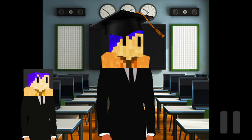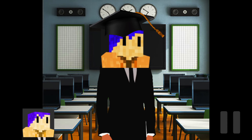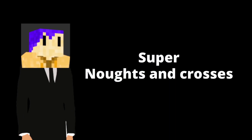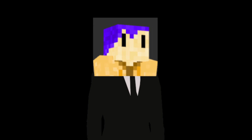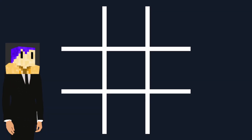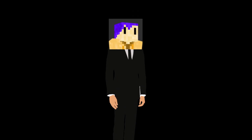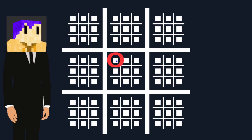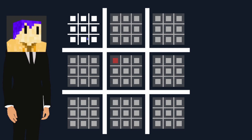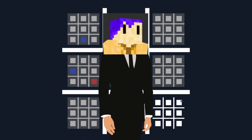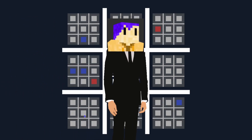Before we begin, we need to actually learn what Super Noughts and Crosses is — don't worry, this won't take long, I promise. Super Noughts and Crosses is a variant of the popular game Noughts and Crosses. And in this version, you play a regular game of Noughts and Crosses, but instead of playing on one grid, you're playing on ten. But what makes this version interesting is at the beginning of the game, if I play on the top left of the center grid, then the next player has to play on the top left grid on the large grid, and so forth. This creates some very interesting gameplay, whilst also lengthening the session of each play.